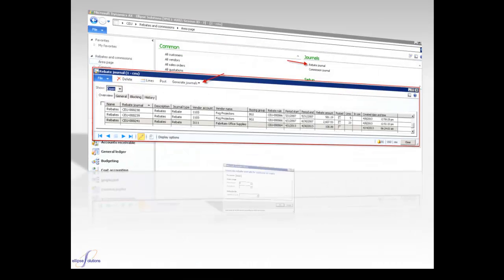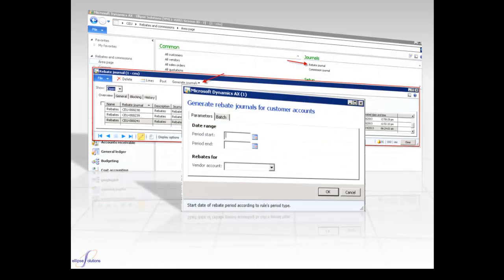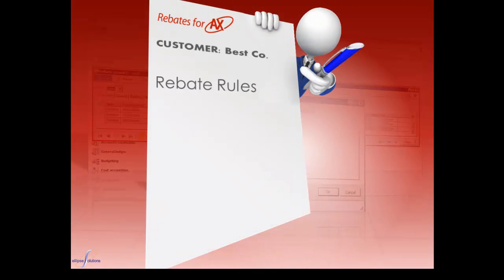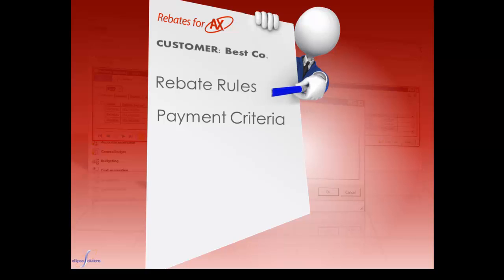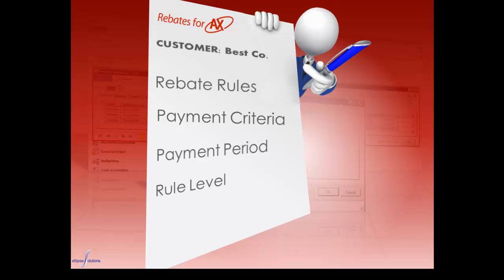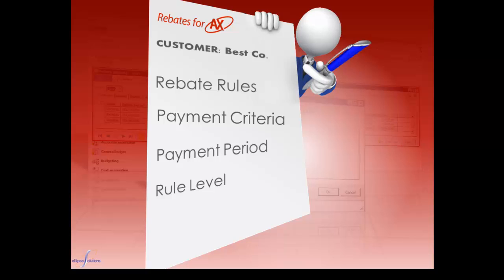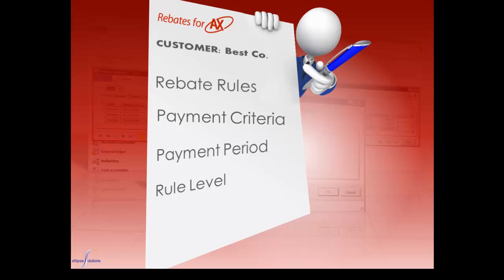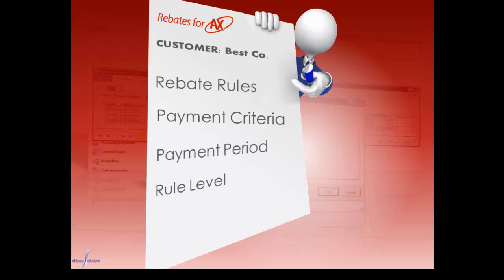Once the rules are established, journals are run at specific intervals to recognize and pay rebates according to the various contracts, such as upon invoice or payment from the customer. Each rule's payment criteria and period is set at the rule level and can be set to include or exclude discounts, freight, other rebates, and miscellaneous charges. The rules can be different for each customer, which allows for tremendous flexibility in your promotions program.